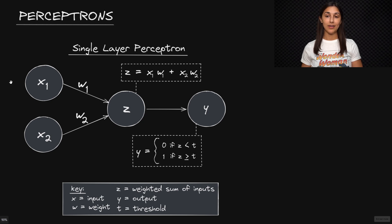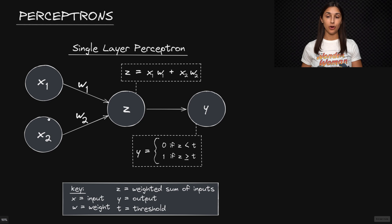Here we have a diagram that illustrates a single layer perceptron. This perceptron accepts a single sample that has two input features, X1 and X2, and these input features are connected to a node within the perceptron.